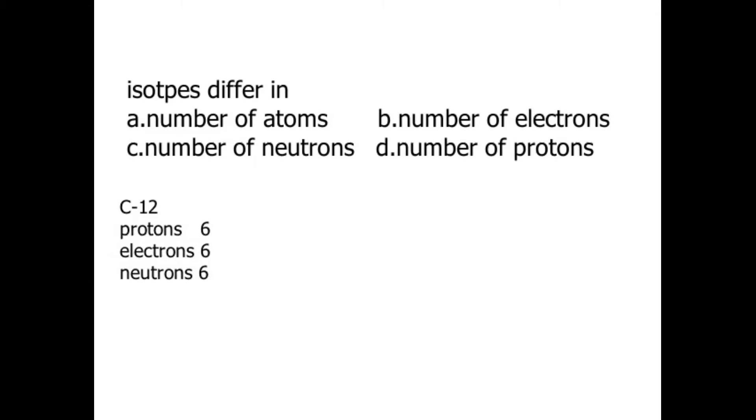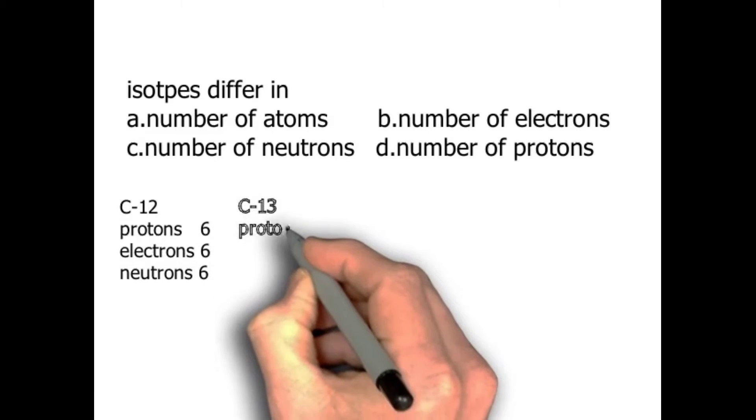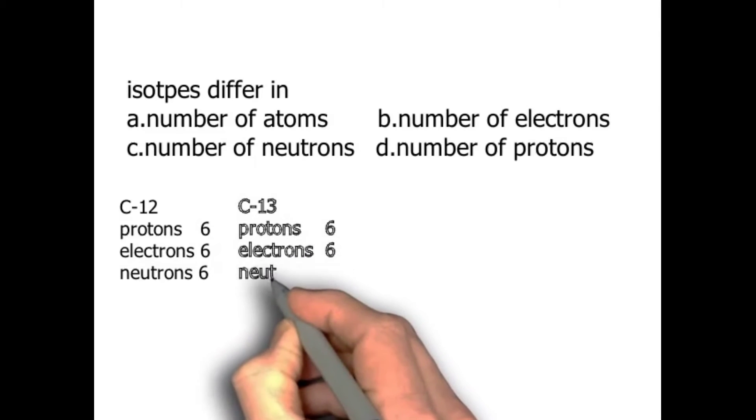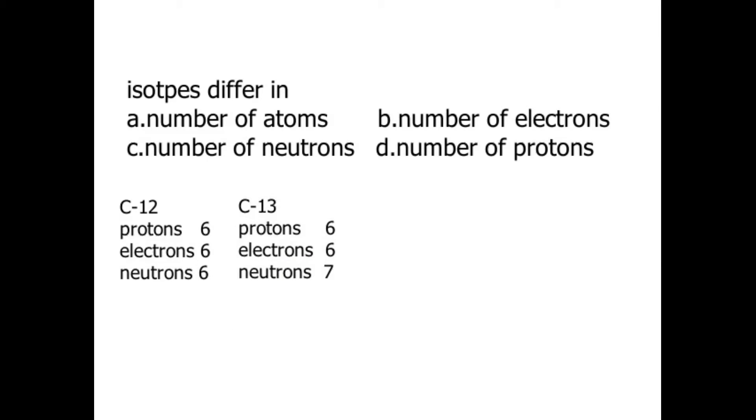Carbon-12 has 6 protons, 6 electrons, and 6 neutrons. Carbon-13 has 6 protons, 6 electrons, and 7 neutrons.